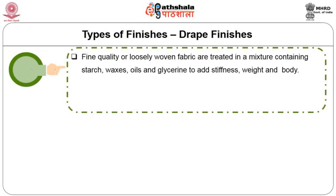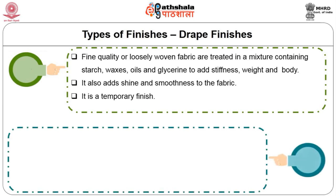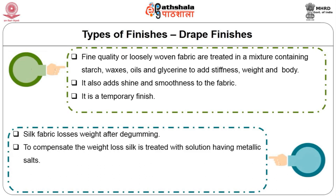Starching adds stiffness, weight and body to the fabric; it also adds shine and smoothness and is a temporary finish. Weighting: silk fabric loses weight after de-gumming. To compensate the weight loss, silk is treated with a solution having metallic salts. It improves its feel and draping quality, but excessive weighting tends to weaken the fabric.